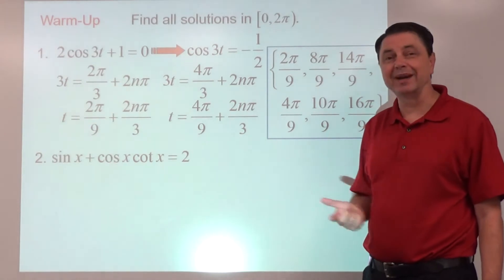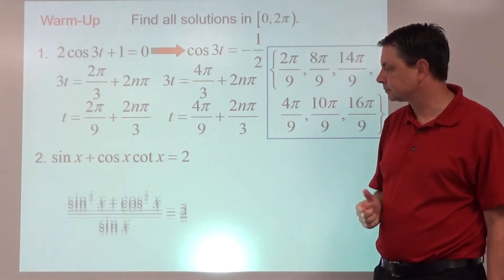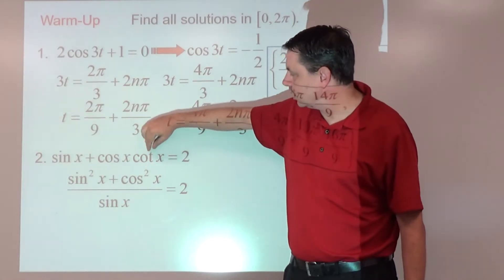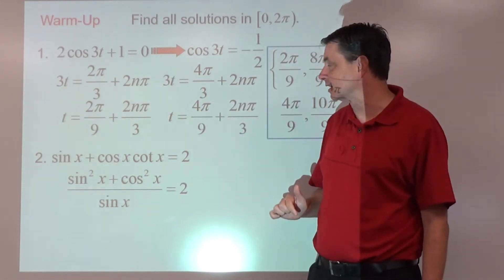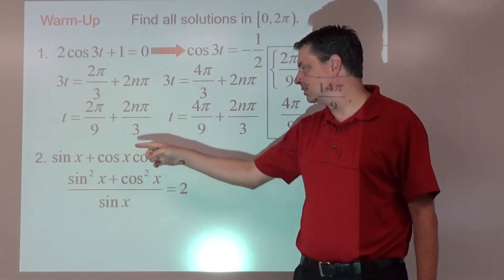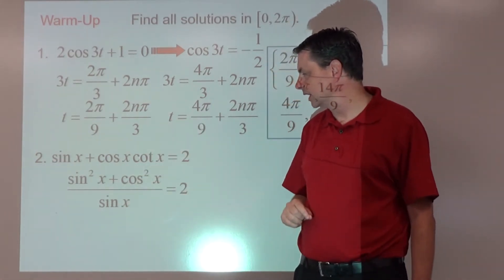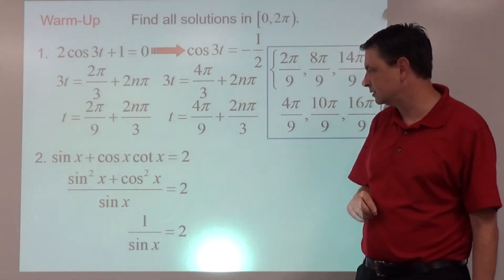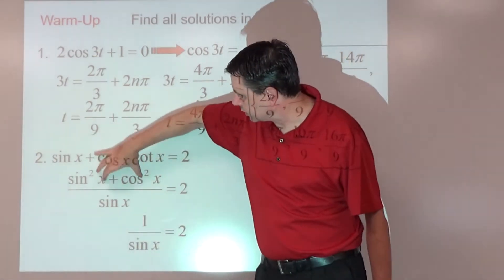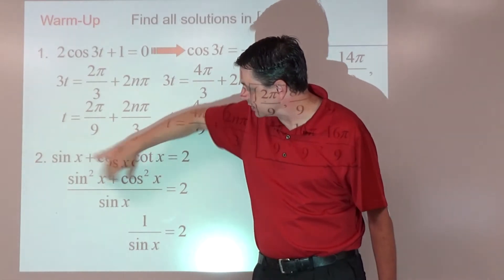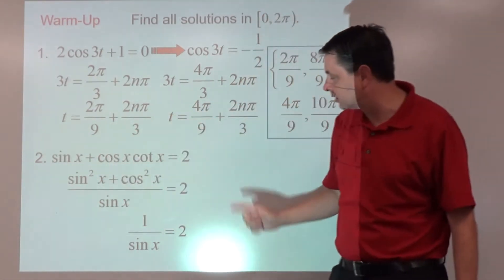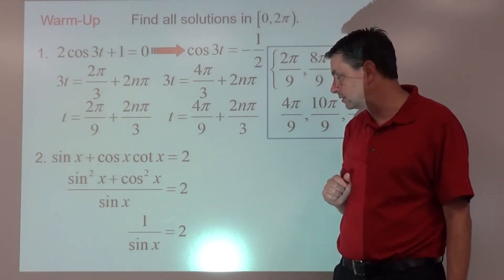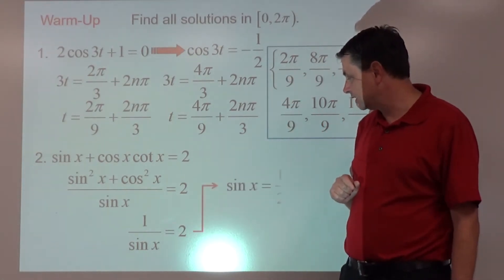Number 2, we're going to have to use some identities on that one. So if we realize that this one's cosine over sine, do everything in terms of cosines and sines, then we can add them together by creating a common denominator. If we multiply both sides by sine of x, or actually think of this as the identity, this is a fat green identity, that's 1. So 1 over sine x is 2. If we then take the reciprocal of both sides, sine x is 1 half.